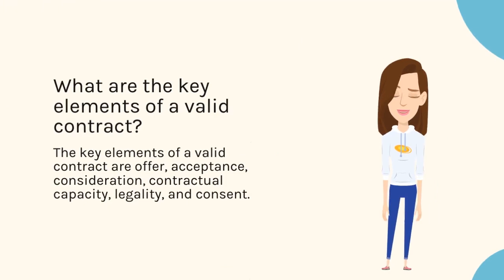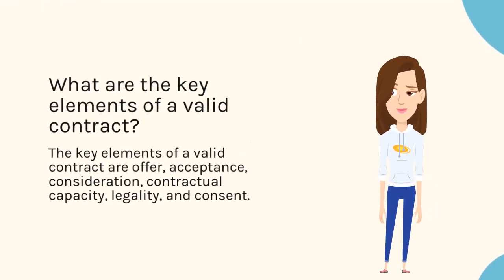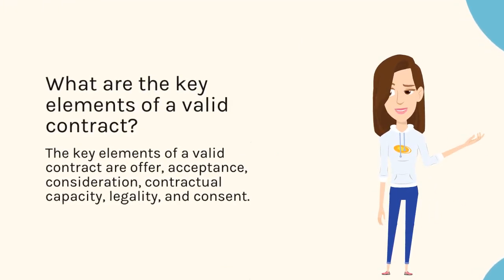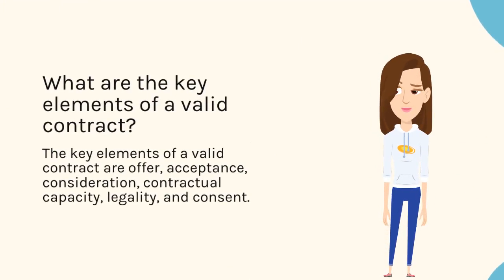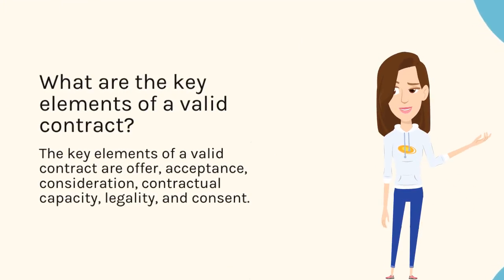What are the key elements of a valid contract? The key elements of a valid contract are offer, acceptance, consideration, contractual capacity, legality, and consent.